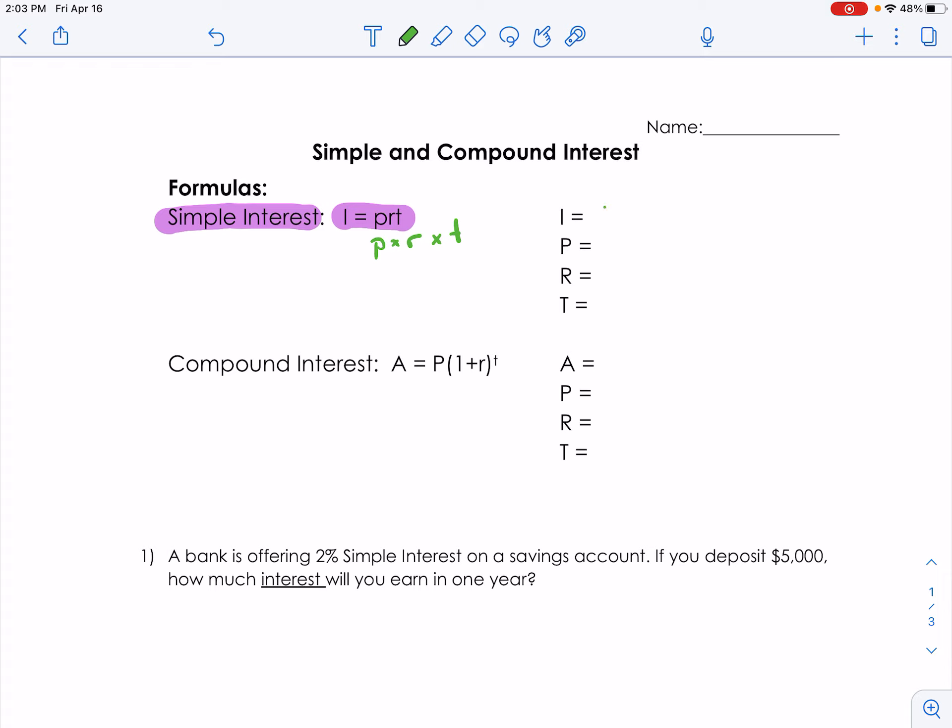The I stands for the interest. So this formula calculates the amount of interest we're either going to have to pay or that we will make at the end of our time.